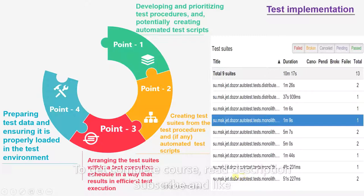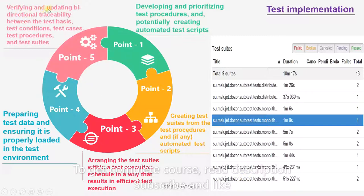The fifth activity is verifying and updating bi-directional traceability between the test basis, test conditions, test cases, test procedures, and test suites. Now we have created test suites in the implementation stage and have to provide traceability between all these stages.